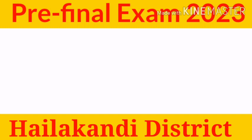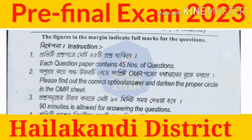Then I will be able to learn. The question is very interesting. This question contains 45 numbers of questions. Please find out the correct option and darken the proper circle in the OMR sheet.